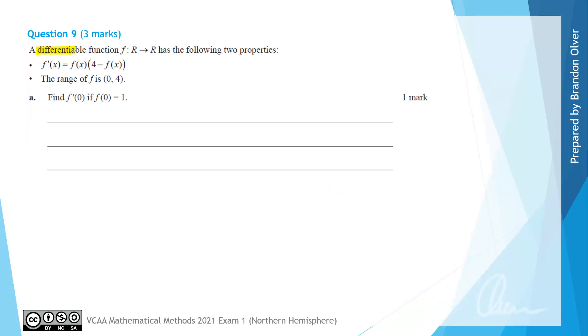For question 9, we have a differentiable function where its domain is all real numbers, and the function is defined to be f, and it has these two properties. We know that the derivative of f(x) is equal to f(x) times 4 minus f(x), and we know that the range of f is 0 not included to 4 not included.